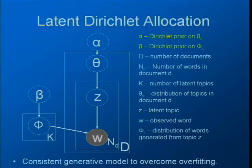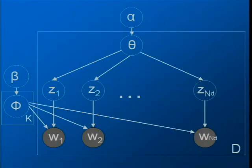We can unwrap the plate notation to write explicitly how a document is generated — showing the sets of words and topics one next to the other. In this representation, you can see there is no direct connection between the topics of different words inside the document. This is exactly the problem we want to solve in our work: relating different words inside the same document.